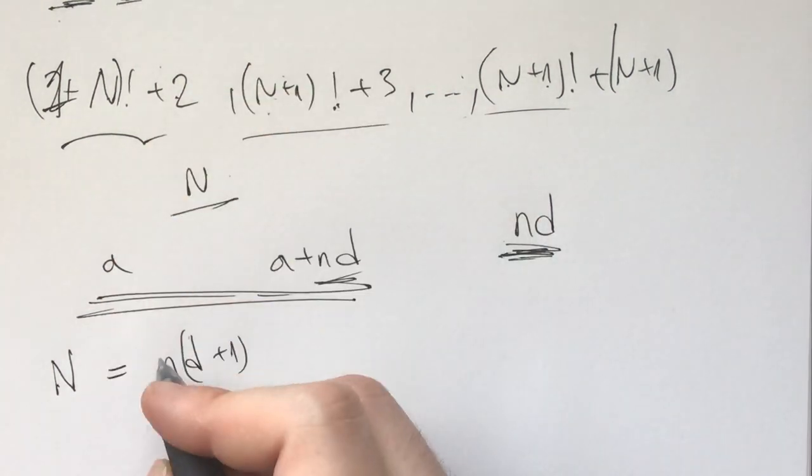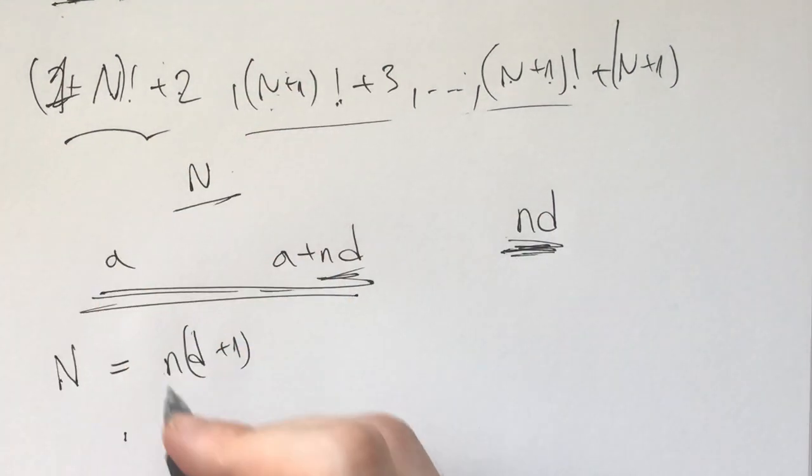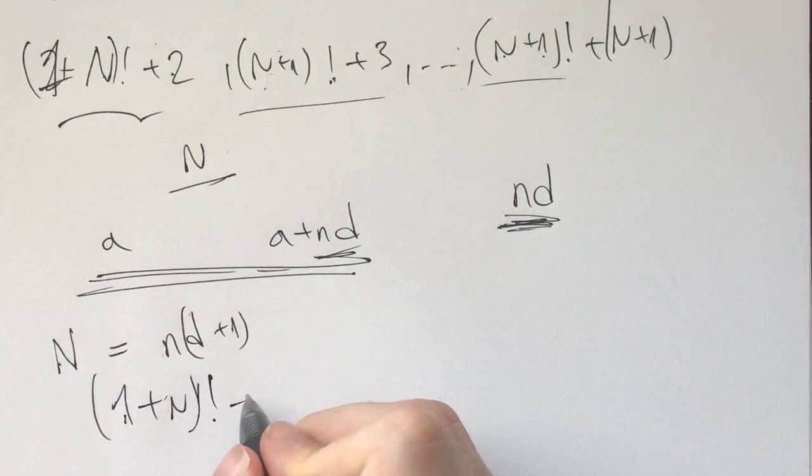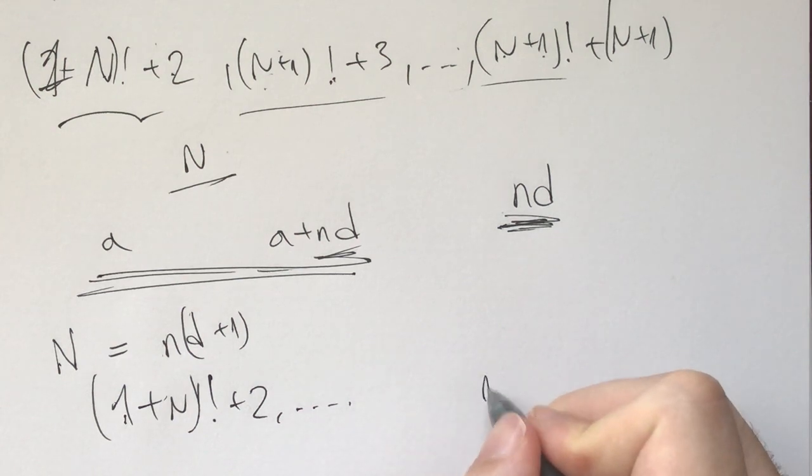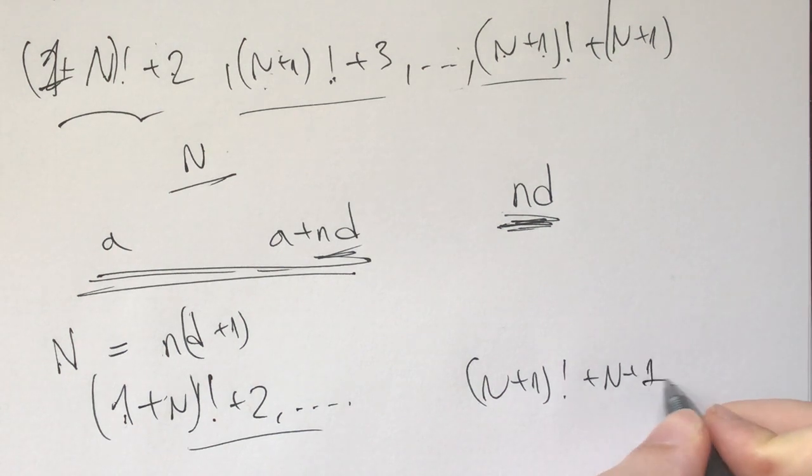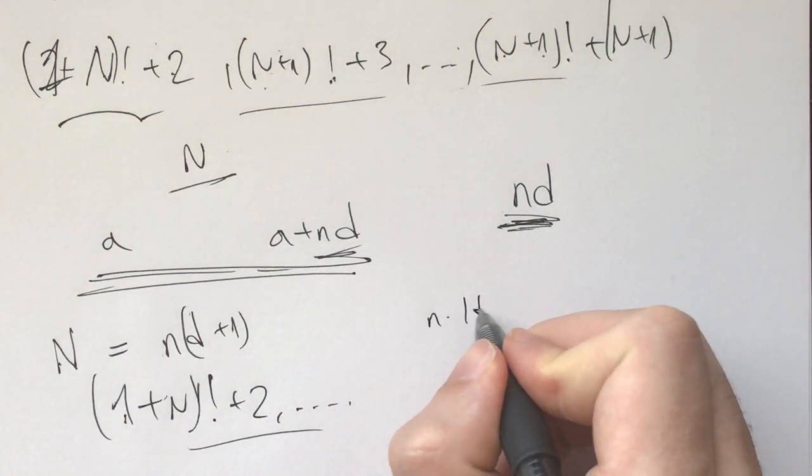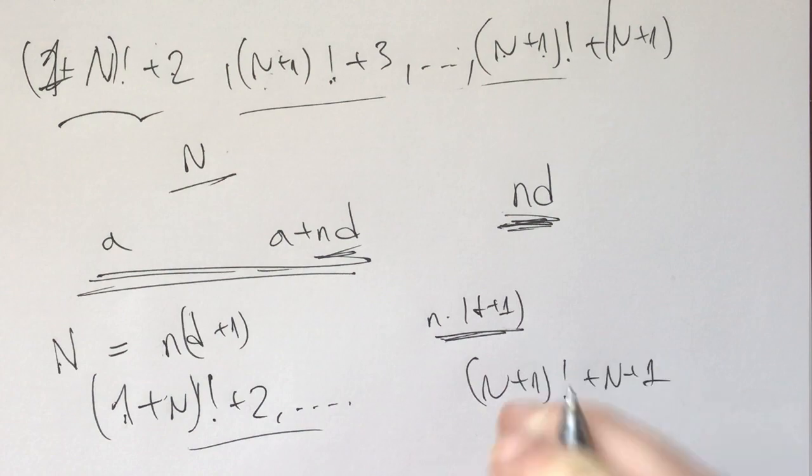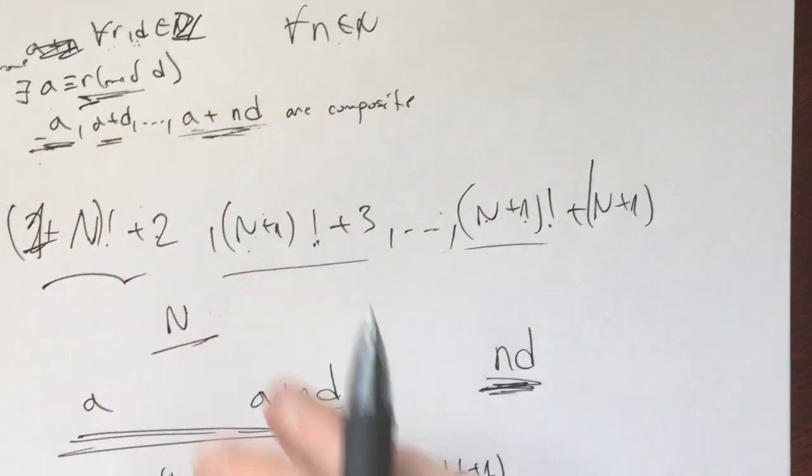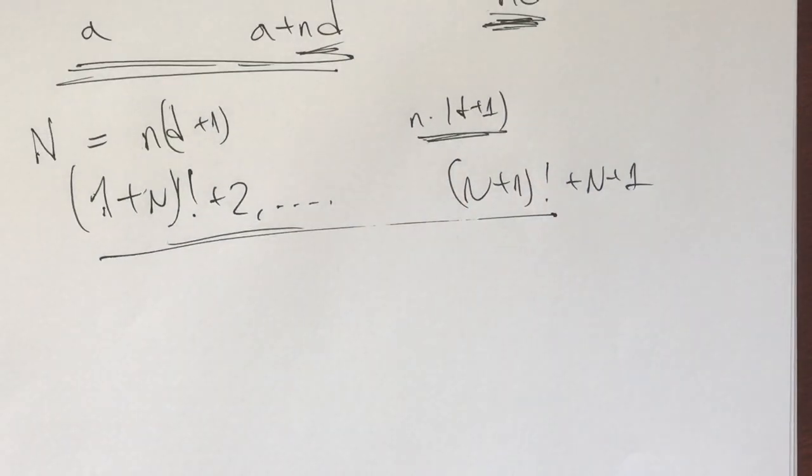And now what we have, we will have that the integers n plus 1 factorial plus 2 all the way till n plus 1 factorial plus n. How many integers do we have here? Well, here we have n times d plus 1 integers, correct? So now how many of these integers are congruent to r modulo d for whatever r is?